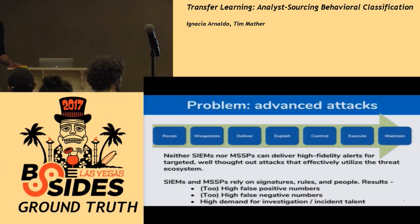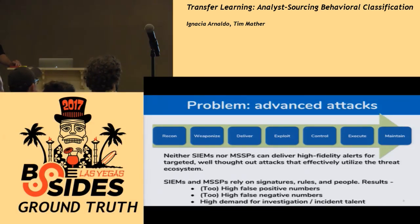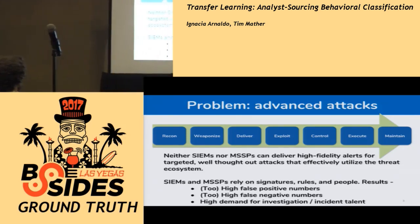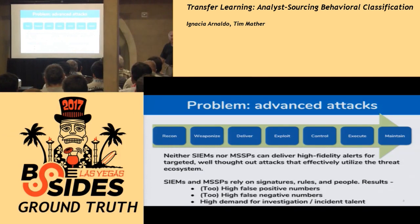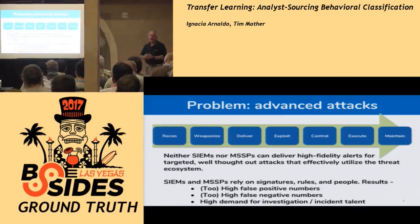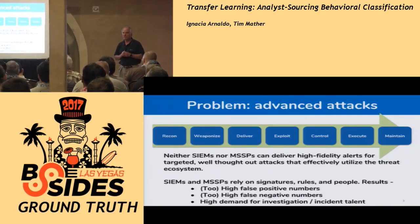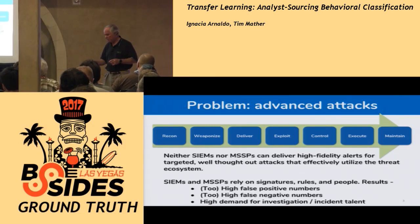Just to set a baseline for what we're trying to do: you're all familiar with the kill chain, and of course you want to interrupt it as far left as possible. The problem is that today the products available to you have way too many false positives and false negatives — hence the number of breaches we have. You therefore have a very high demand for investigators and SOC analysts, and frankly, being a SOC analyst is a pretty boring job. Most of them last about a year and move on.